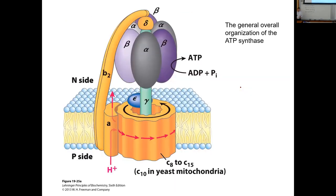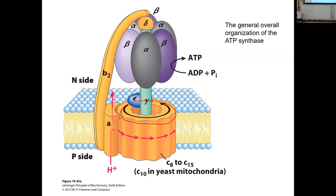This diagram represents both the F0 and F1 regions of ATP synthase. The cylinder I described is made up of C proteins, and the number differs between species — in mammals there are 10 copies of the C protein making up the cylinder. The cylinder actually spans the inner membrane of the mitochondria and contacts the A protein.